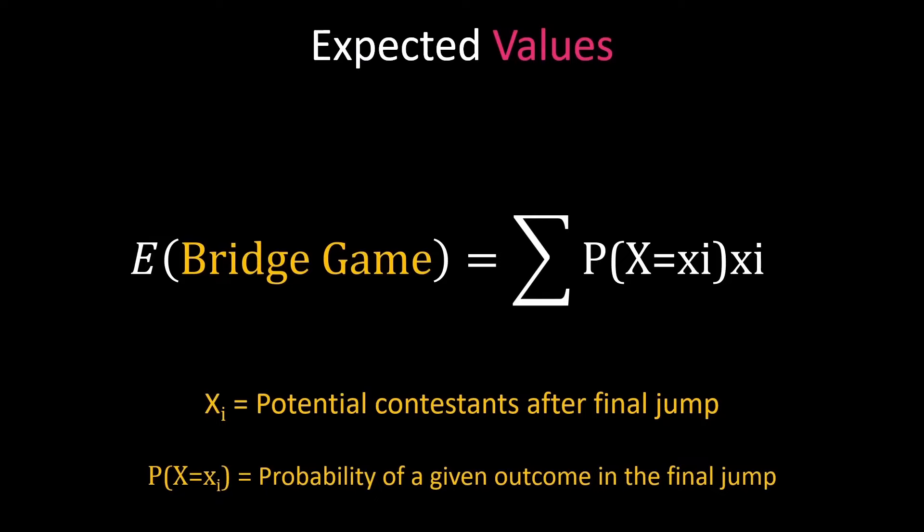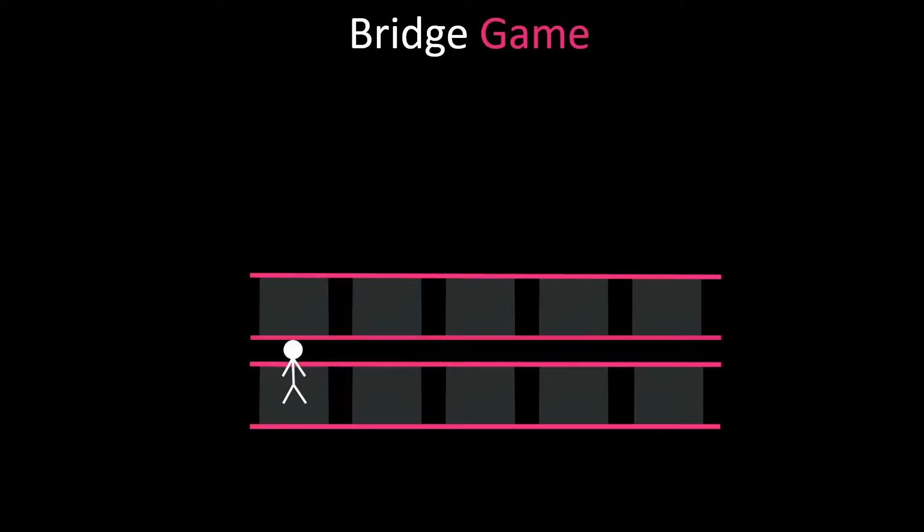There's a problem with this formula though. Can you spot it? That's right this only accounts for the last jump of the bridge and that's a problem because the contestants have to do much more than one jump to get to the end.